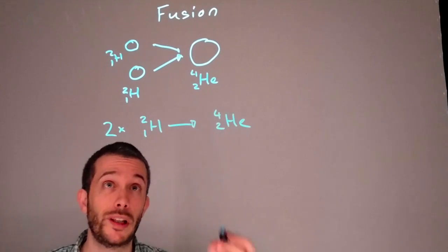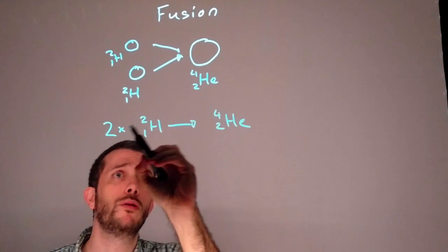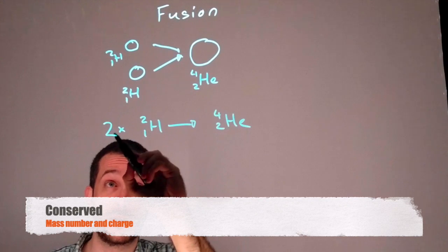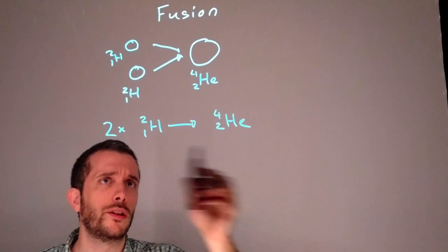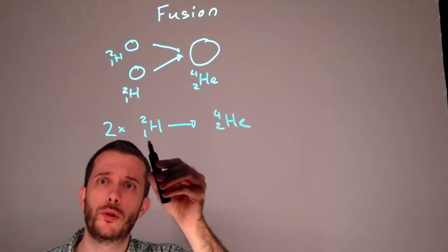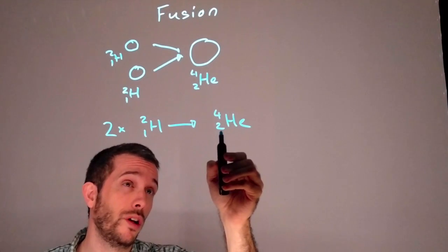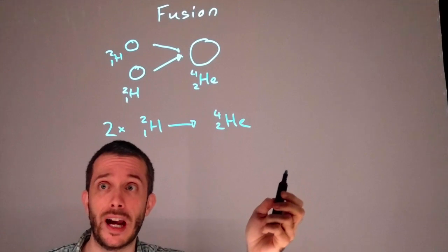As with all nuclear reactions your total mass number should be conserved. So two times two is four is four as should be the total charge. So here we have a total of two protons, here we have a total of two protons, so that's working out.